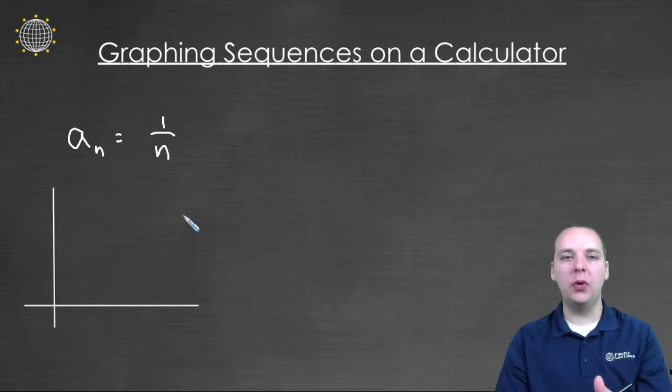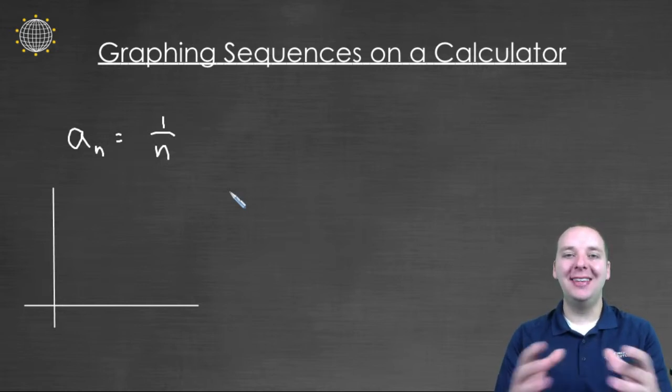When we graph a sequence like 1 over n, what we actually get is a collection of points. We do not get a solid line for the graph of a sequence like we would for the graph of something like x squared. The reason for that is for a function like f(x) equals x squared, the x's are ranging over all real values and there's so many and they're what we call dense.